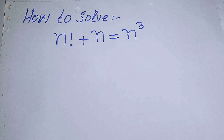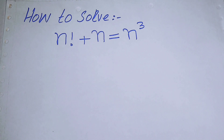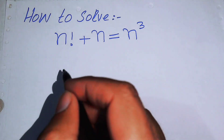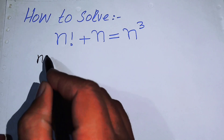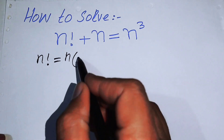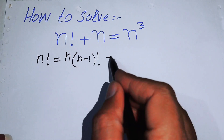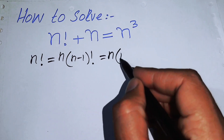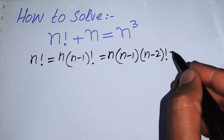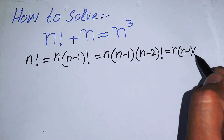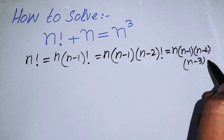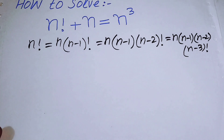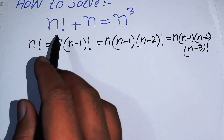The very first thing we are going to do is use the recursive method. If you have n factorial, we break it into n times of (n-1) factorial. If we open this further recursively, we get n times (n-1) times (n-2) factorial, and again n times (n-1) times (n-2) times (n-3) factorial. This is known as the recursive method — we open n factorial up to the terms of n.